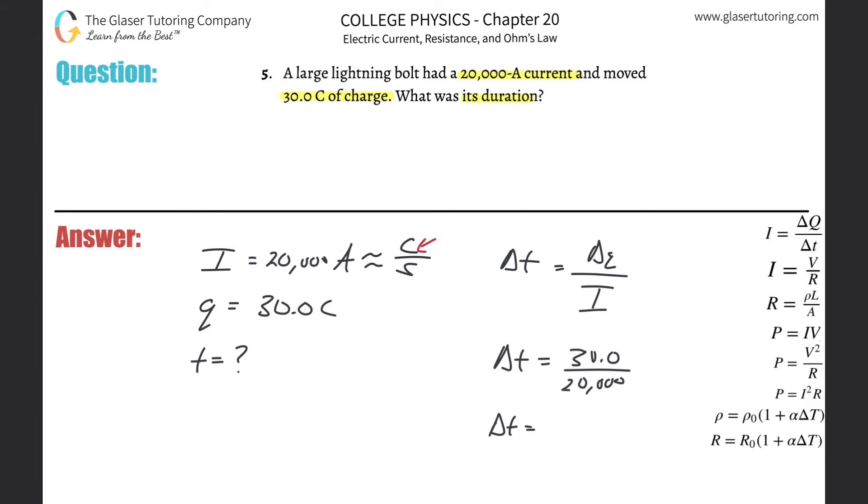And all we need to do is just plug it into the calculator. So this will be 1.5 times 10 to the minus three seconds.